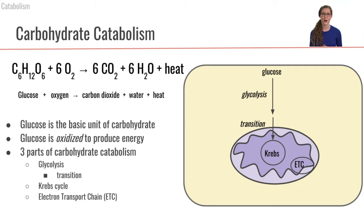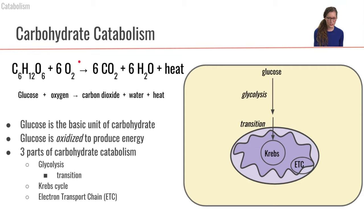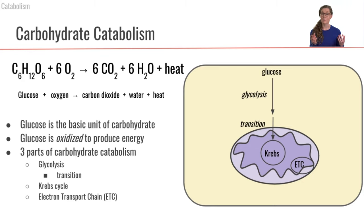To begin talking about carbohydrate metabolism, let's look at how this is written out in a chemical reaction. We start with glucose, C6H12O6. When we are oxidizing glucose, we are going to add six oxygens, and ultimately the products of this metabolic reaction will be six carbon dioxides, six waters, and heat. Heat is going to be the energy. Glucose, as we talked about last lecture, is the most basic unit of a carbohydrate. Glucose gets oxidized in order to produce energy in our cells.